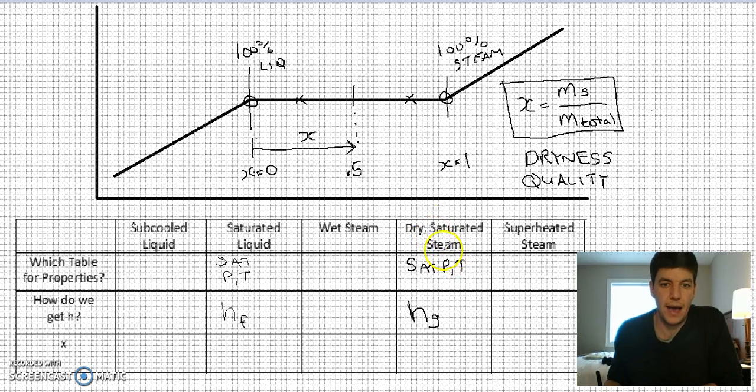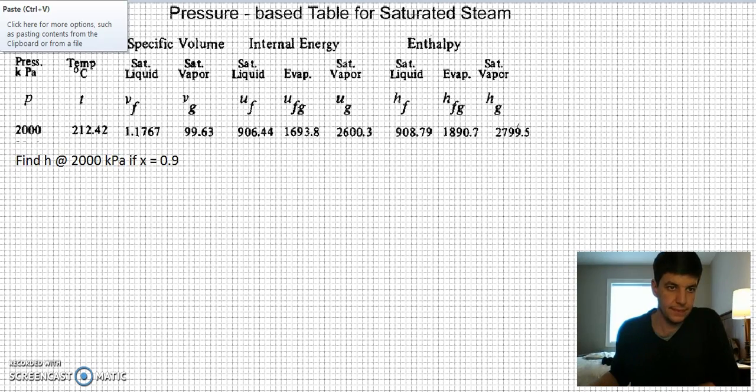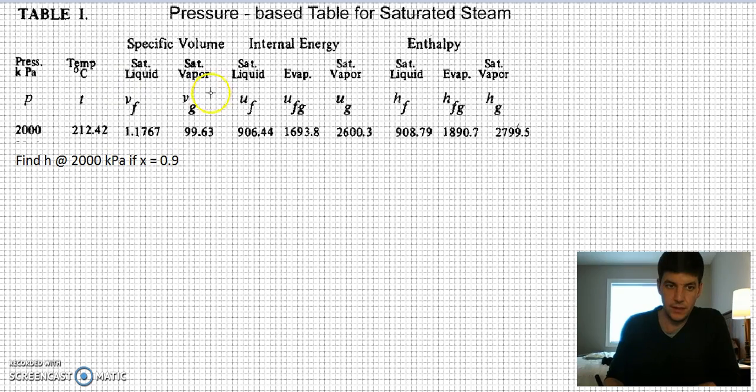Let's try and figure out how we would actually find out an H value for somewhere inside of this region. Because we could find HF here, we could find HG here, and we can find those right out of the tables. If we're somewhere in the middle, we're going to have to figure out how to get a property. Let's say that what I'm trying to do is solve for this: Find an H value at 2000 kPa if X is equal to 0.9. So I know that it's somewhere inside of this range, between HF and HG. I've grabbed my steam table properties for pressure 2000.